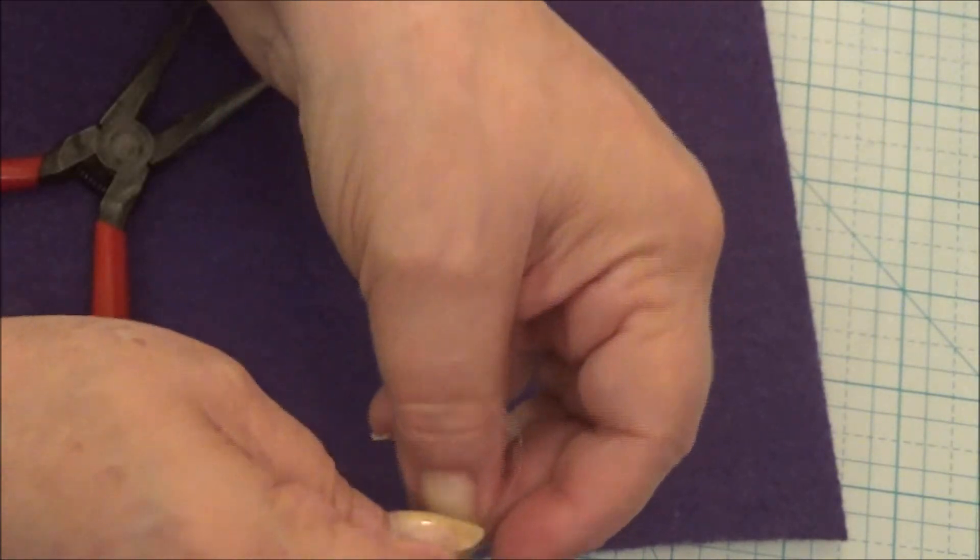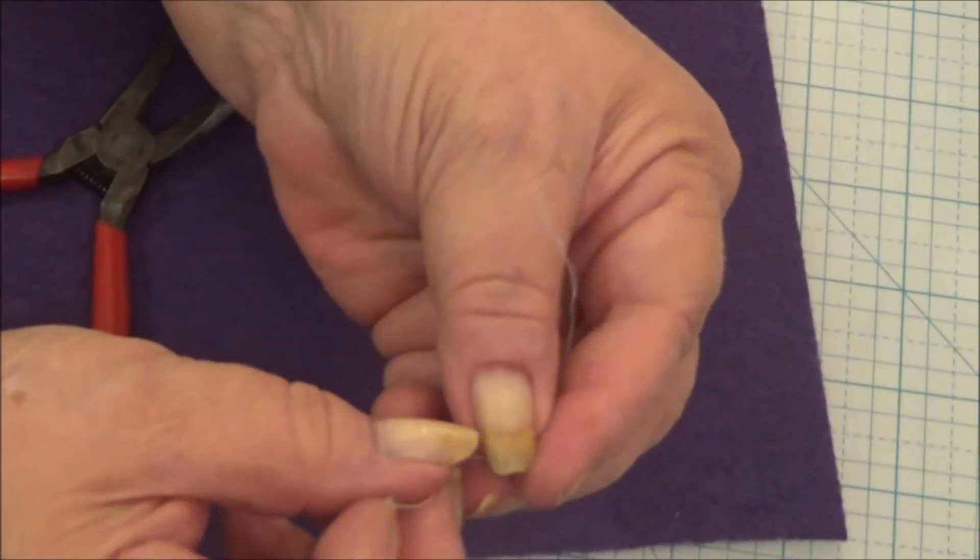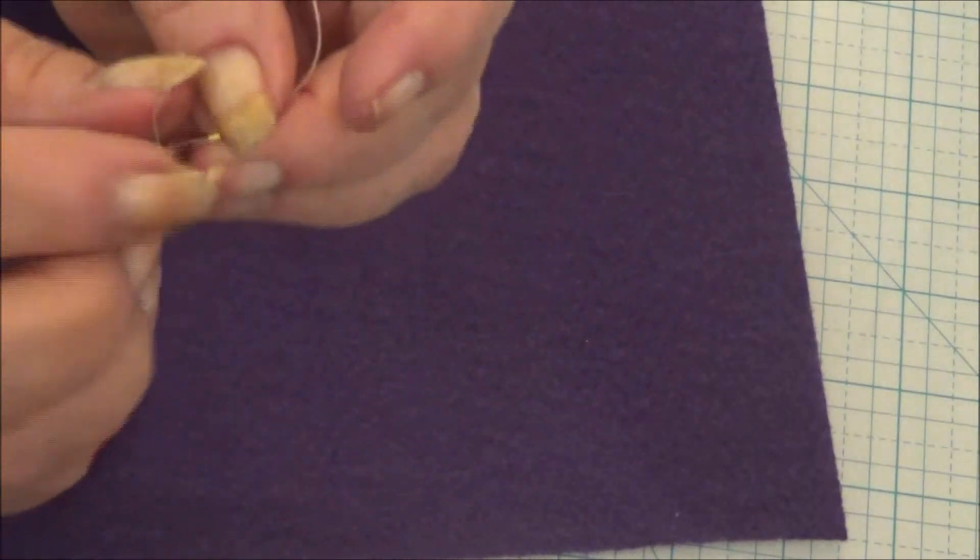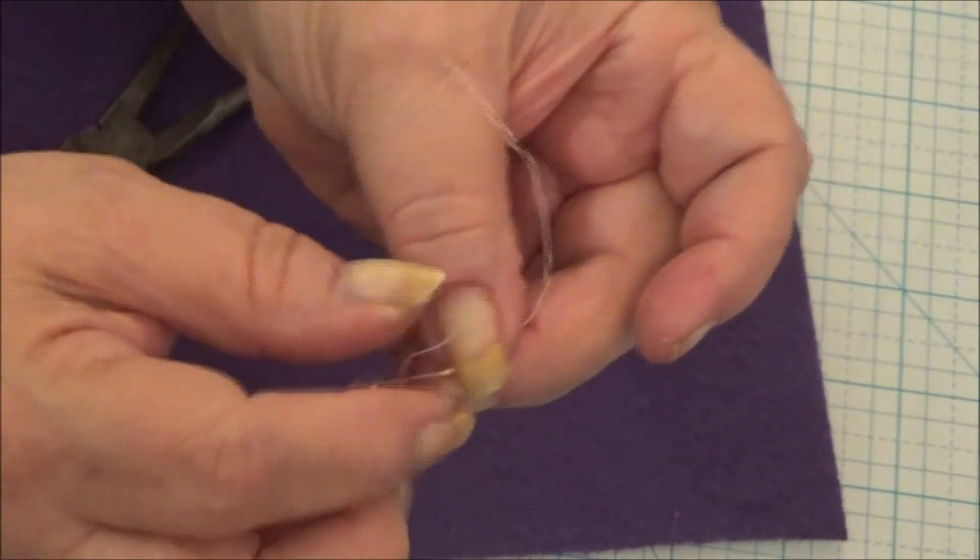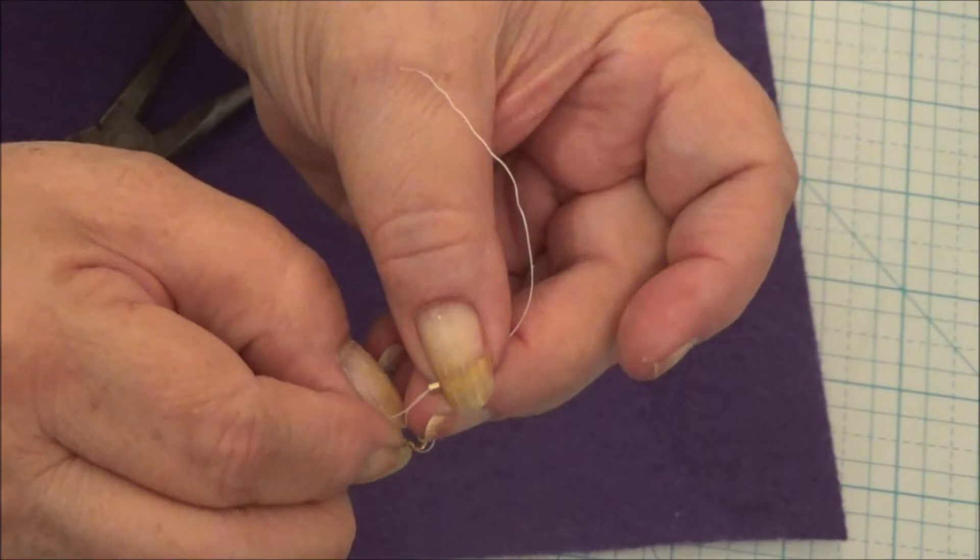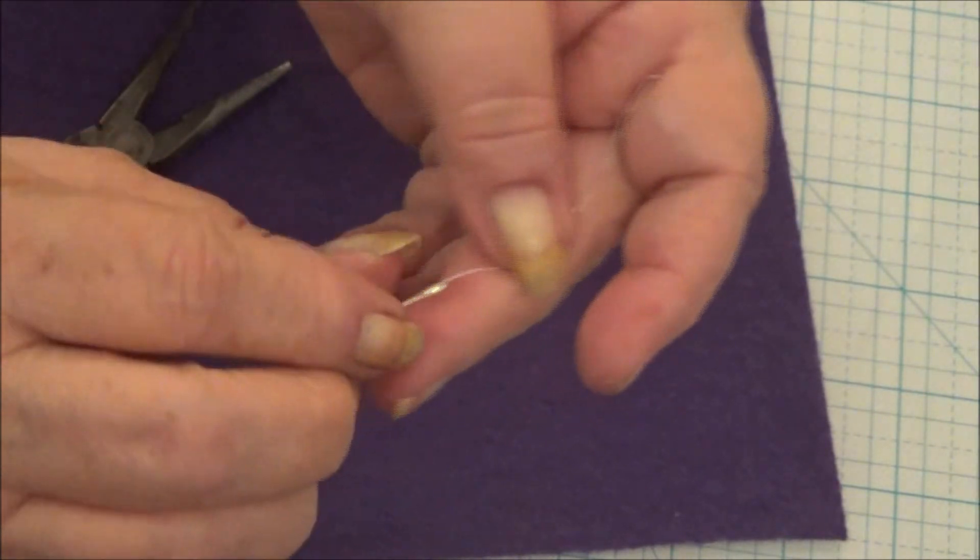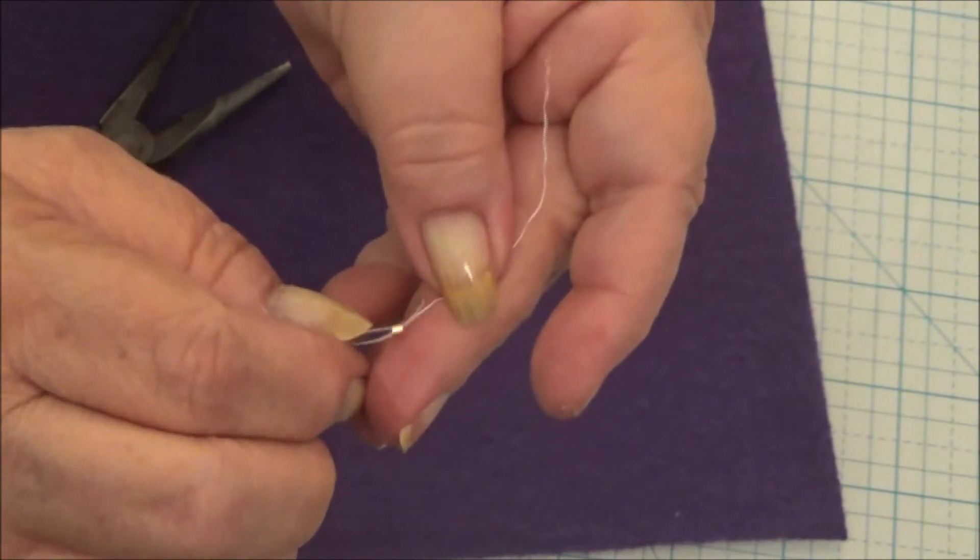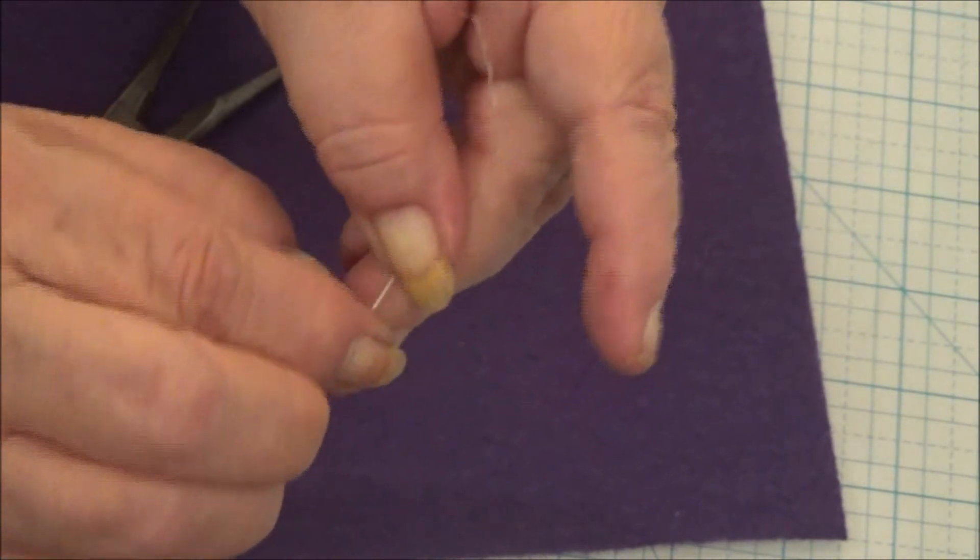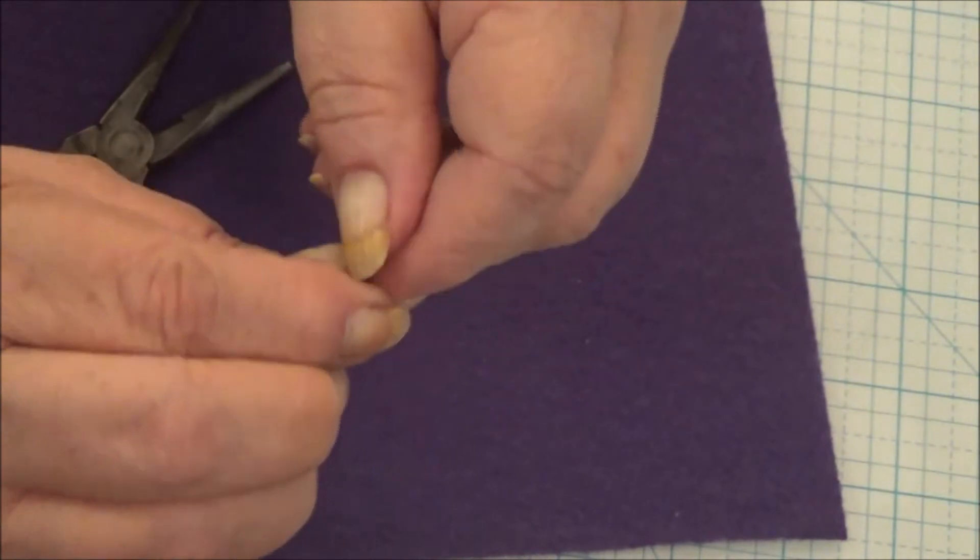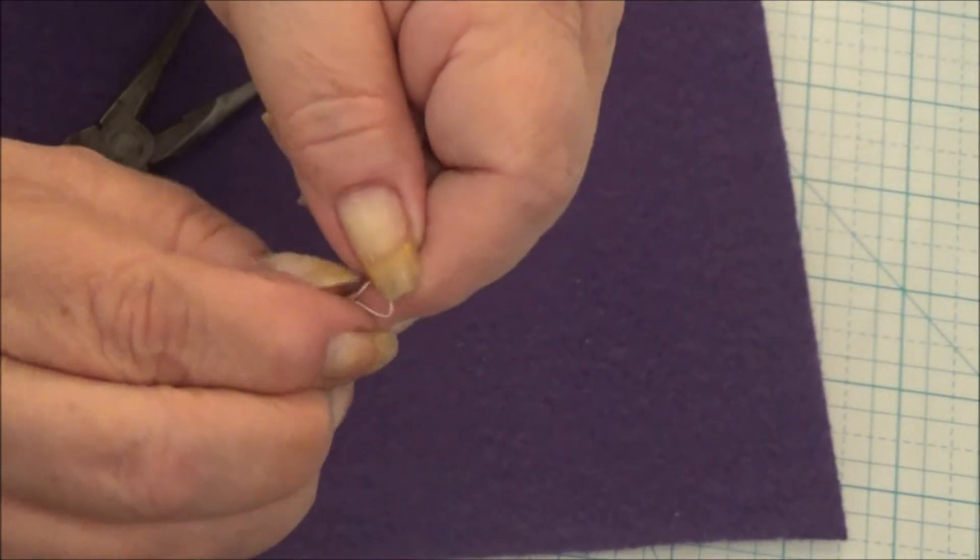Because what we're going to do is take the other end of this wire and put it back through your crimp bead. I've got my crimp bead down there. And we'll put this right back through the crimp bead. And now I've got both ends through the crimp bead.